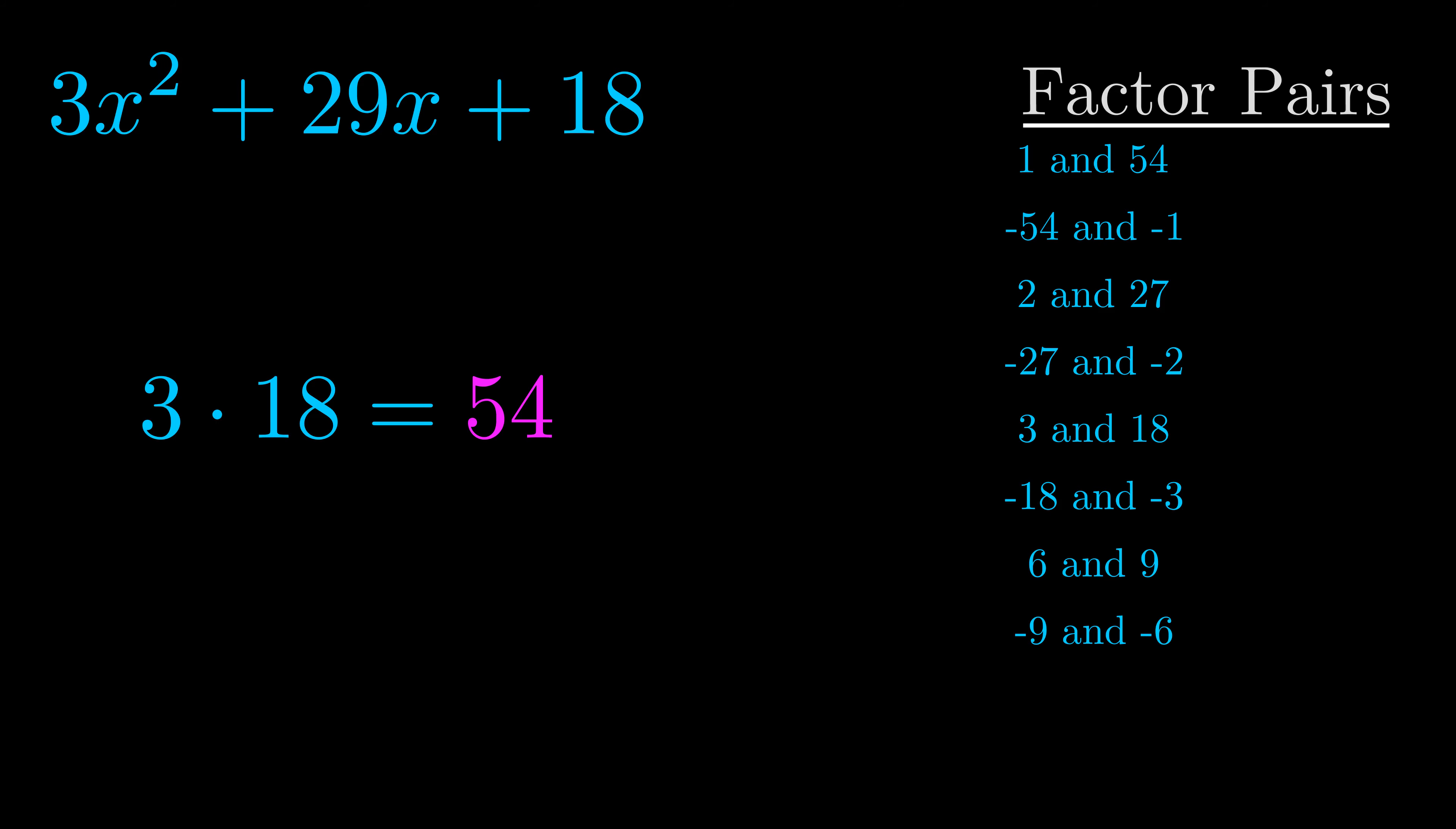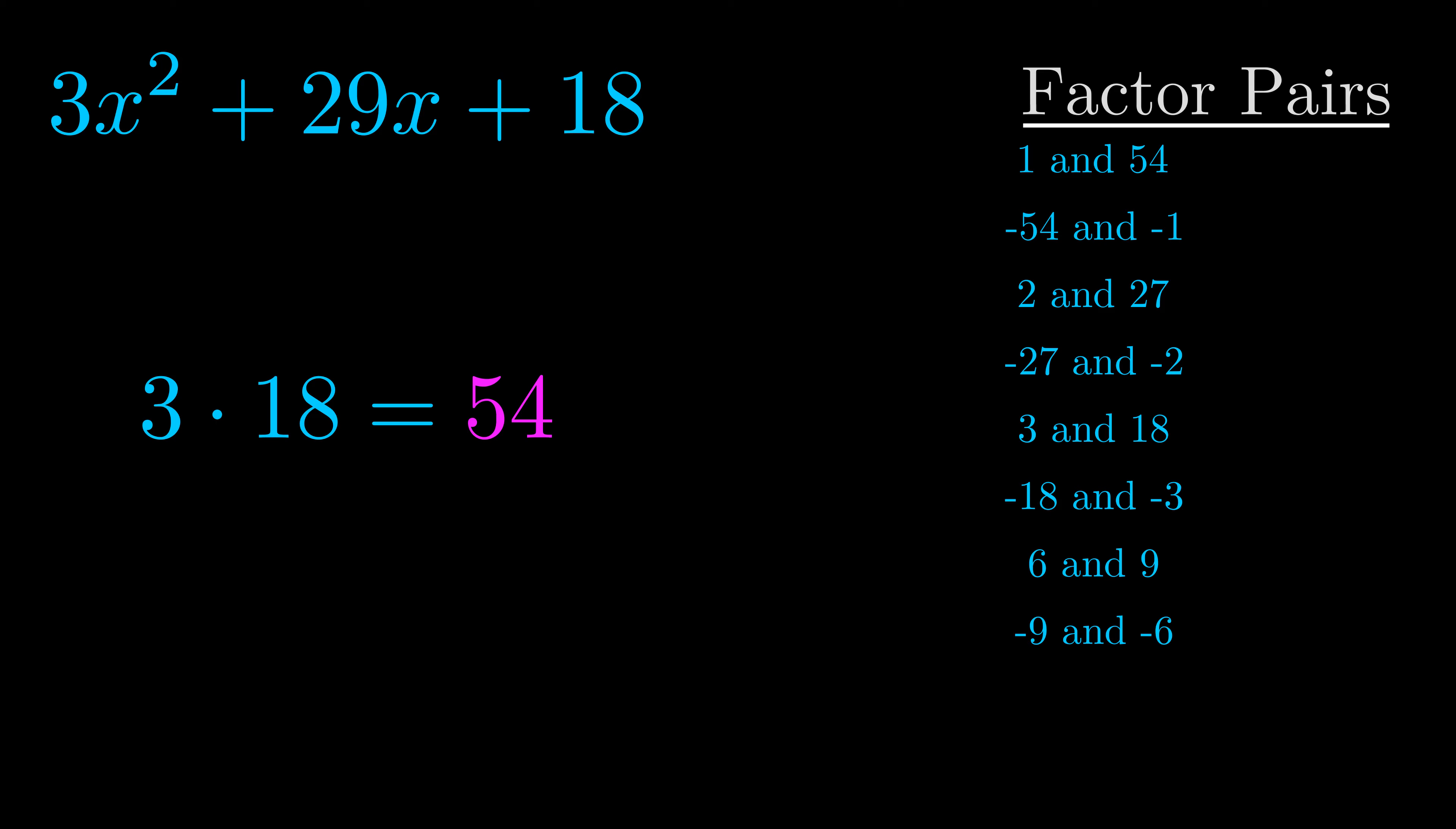Now once you have these factor pairs the goal is to find which of these pairs adds to the b value. The b value is the coefficient on the x term. That's the middle term, the one that we haven't done anything with yet. And really this is the only factor pair that we need.